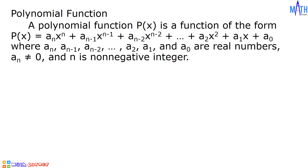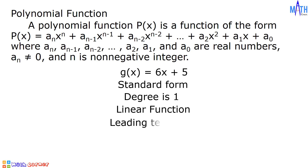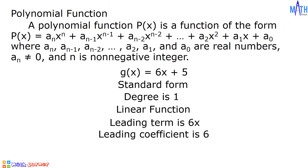Example number 3: G of X equals 6X plus 5. This polynomial function is written in standard form. This function is of degree 1 — it is called a linear function. The leading term is 6X, the leading coefficient is 6, and the constant term is 5.